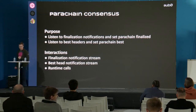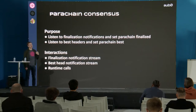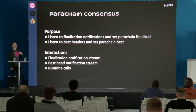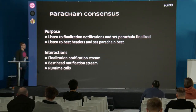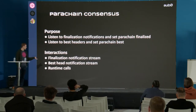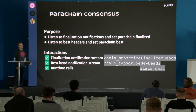Next we have parachain consensus. Inside Cumulus we have this parachain consensus mechanism where we basically finalize parachain blocks based on what we see in a notification stream from the relay chain. When we receive a new finalized block notification, we look at what the parachain head is at that point and then finalize the given parachain head — the same we do with best blocks. Here we just listen to notification streams and do runtime calls, so this is available via RPC.